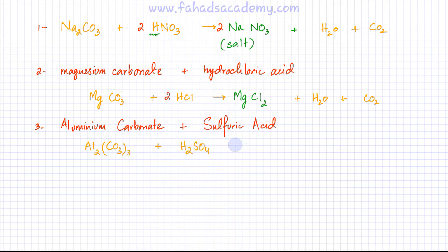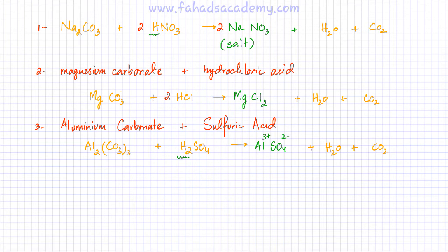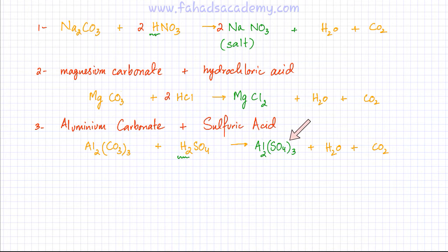When they react, they produce a salt, a water molecule, and carbon dioxide. Write those down and figure out the salt formula. The salt is produced when the acid is neutralized — get rid of the H in H₂SO₄ and replace it with aluminium ions. So we get Al and SO₄. Since Al is 3+ and SO₄ is 2−, using the crisscross method, the formula is Al₂(SO₄)₃.